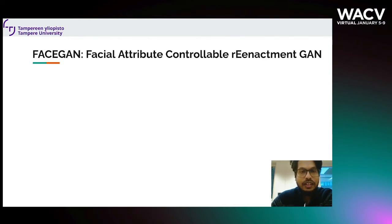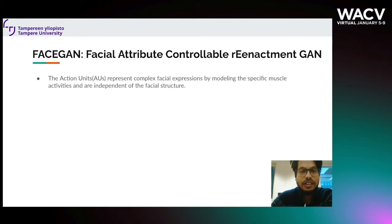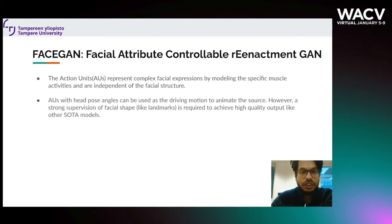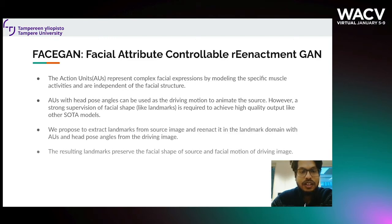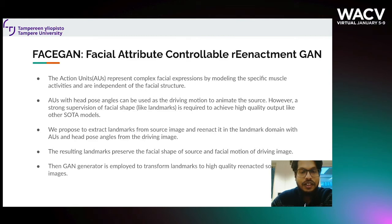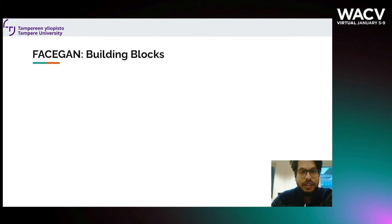We propose FaceGAN, which uses action units from the driving face rather than landmarks. Action units are simply the muscle activations and they are not related to facial shape or structure. Landmarks are also important to give a clear structure of the face, which improves the quality of the final image. So we take the source landmarks and driving action units, animate the landmarks first to incorporate the driving emotions and pose, and finally pass the resulting landmarks through the GAN to generate the final RGB image.